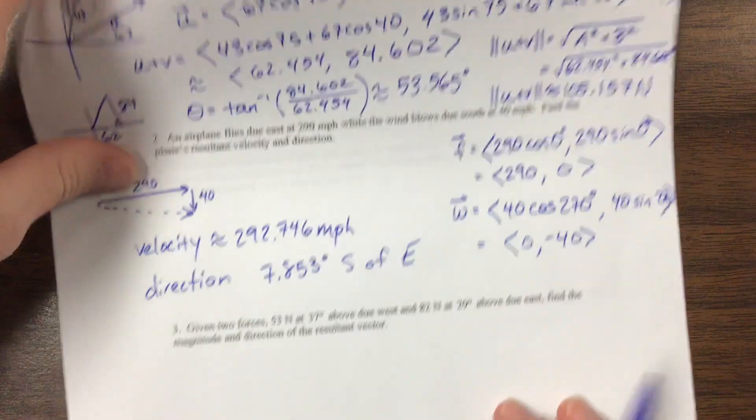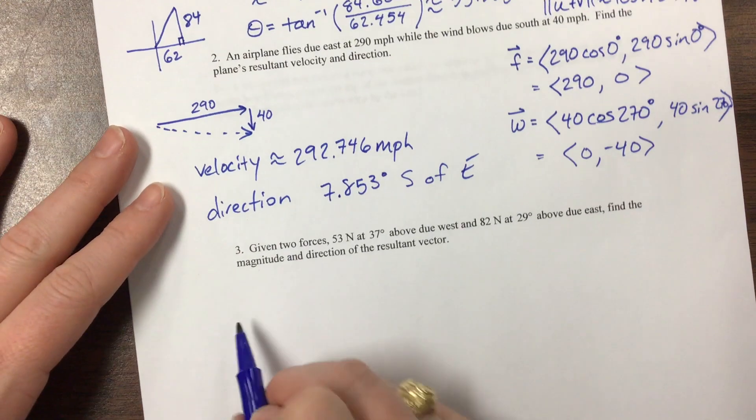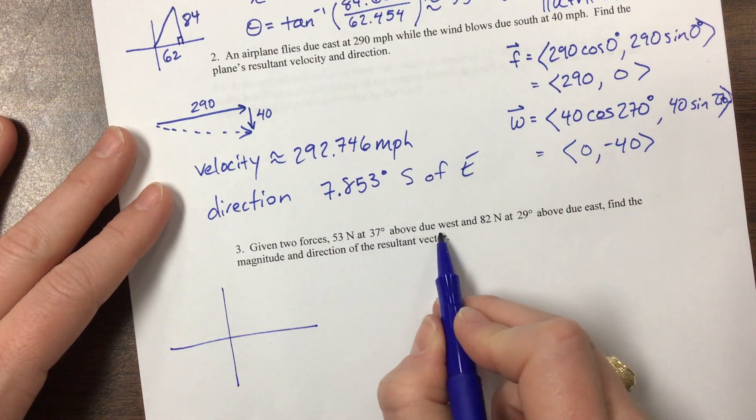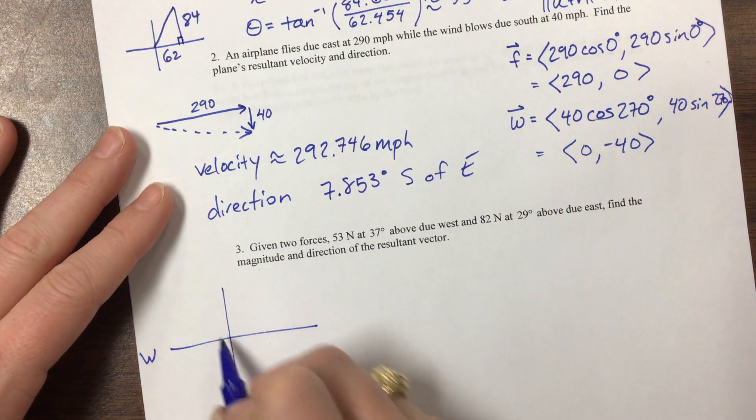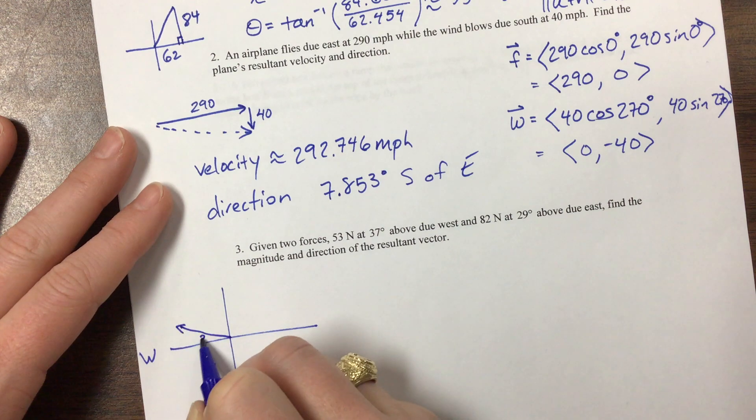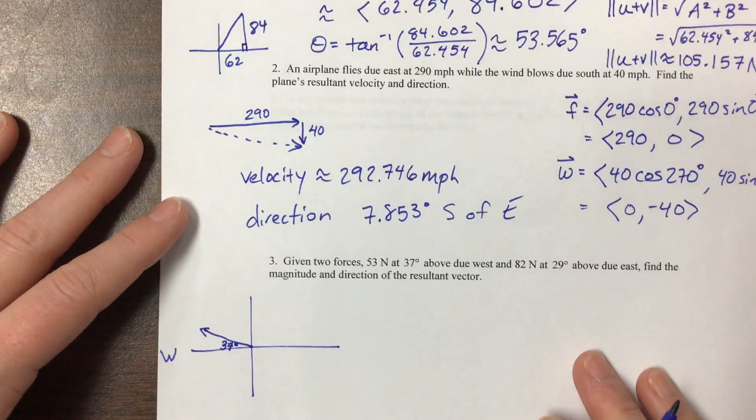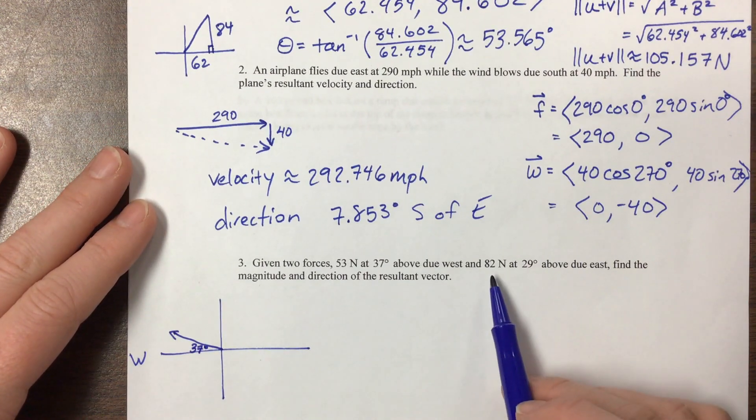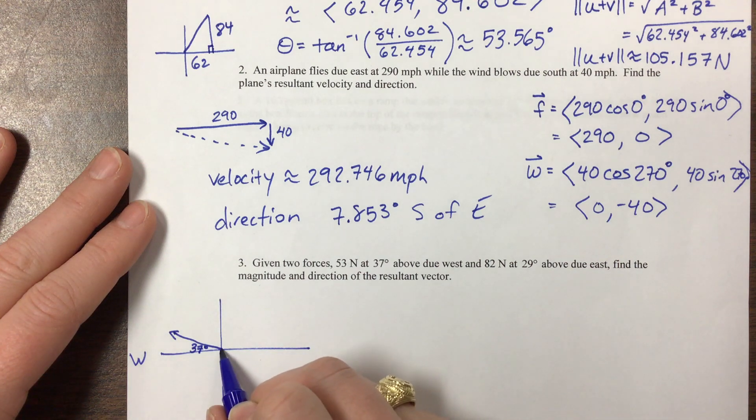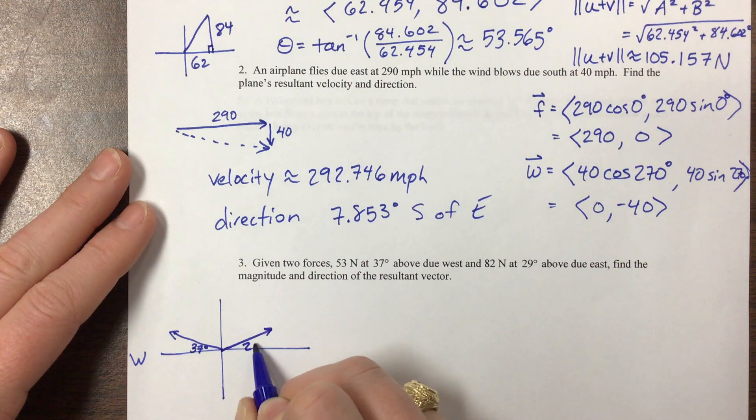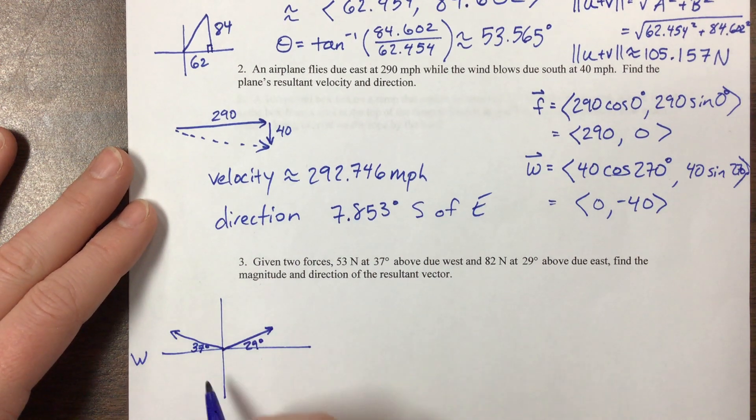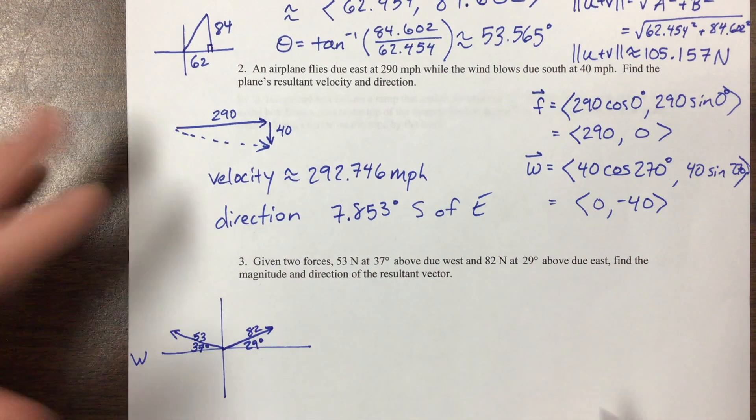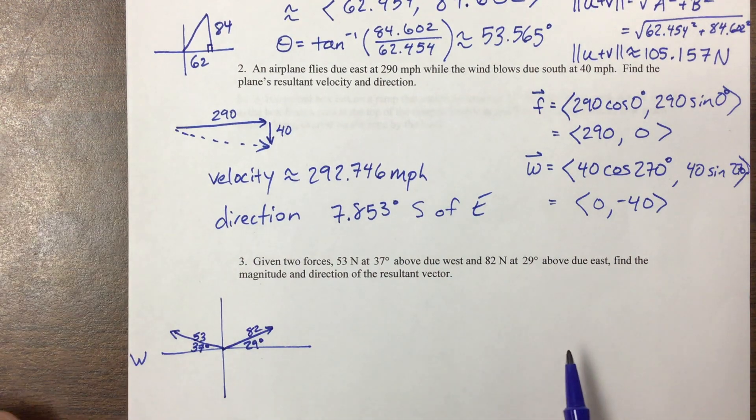Let's do the next one really fast, I think it's pretty straightforward. Given two forces at 37 degrees above due west, so due west is this way, so 37 degrees above that is going something, here's this 37 degrees, and then 82 newtons at 29 degrees above due east. So this angle right here is 29 degrees, and so this has a magnitude of 53, this has a magnitude of 82, maybe it's definitely not drawn to scale, but we want to see what the resultant is.